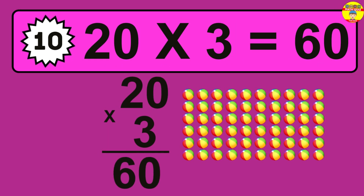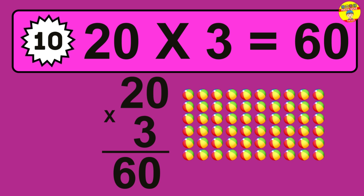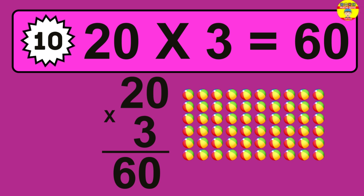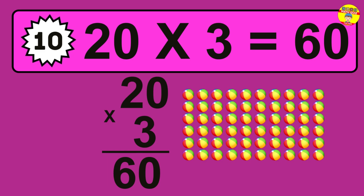Question ten: 20 times 3 equals what? The answer is 20 times 3 is 60. To calculate, we have 20 groups with 3 balls each. So how many balls do we have? 60 balls.